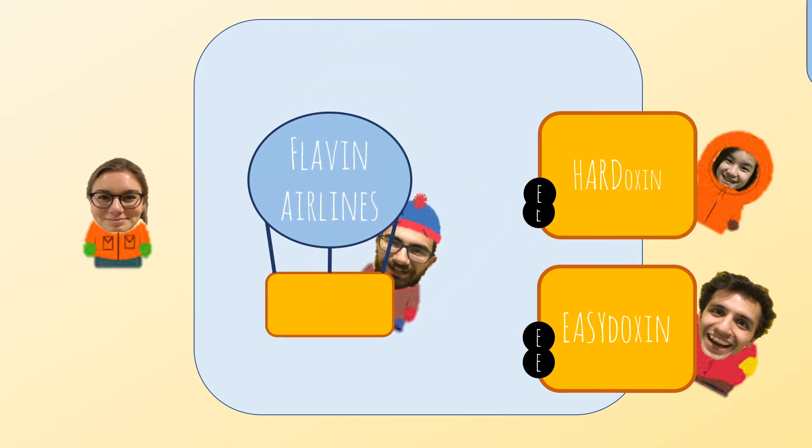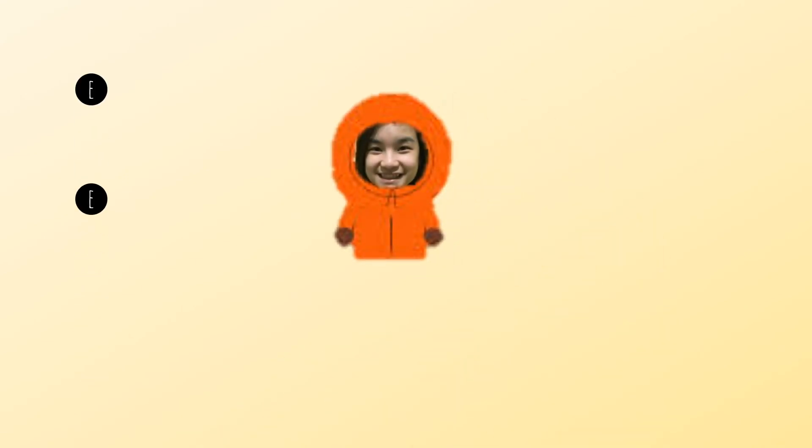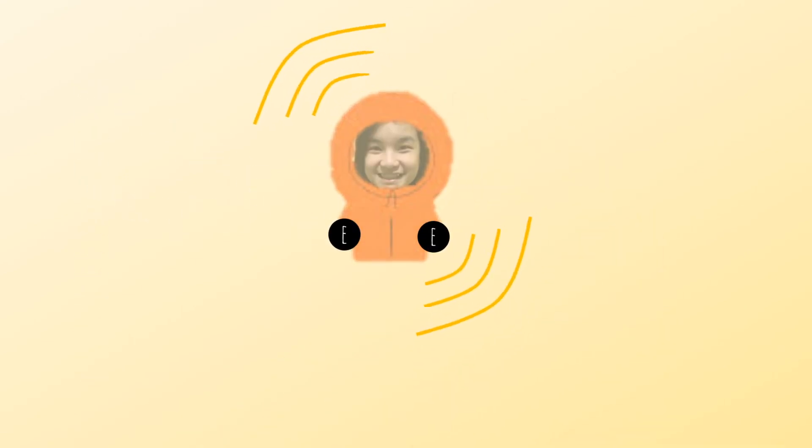But the question is, how is this applied in the cell? Why do cells need hardoxin to accept those electrons? This is the hardoxin. After accepting the two electrons, it becomes really energized.